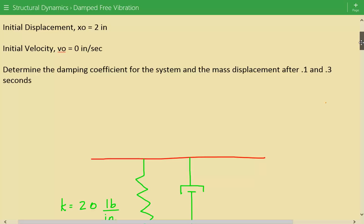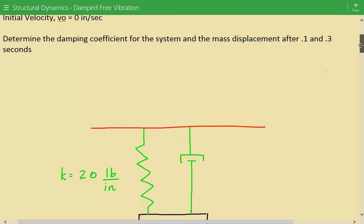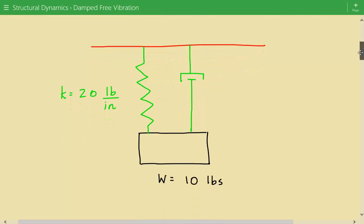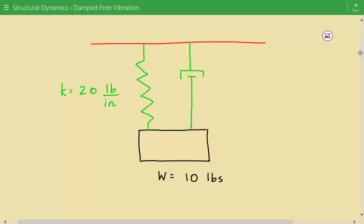We need to determine the damping coefficient for the system and the mass displacement after 0.1 and 0.3 seconds. So here's our spring mass system, and the spring stiffness is 20 pounds per inch. The weight of this mass is equal to 10 pounds.